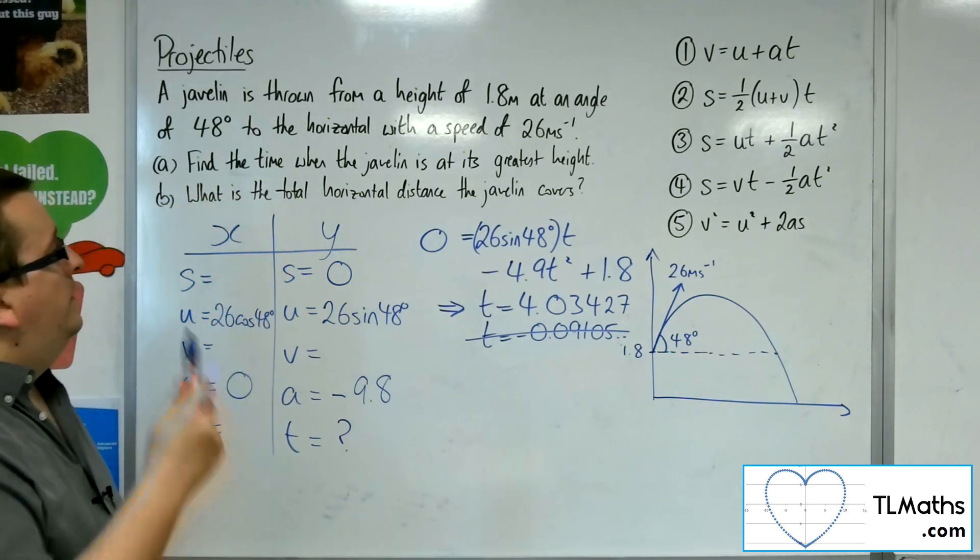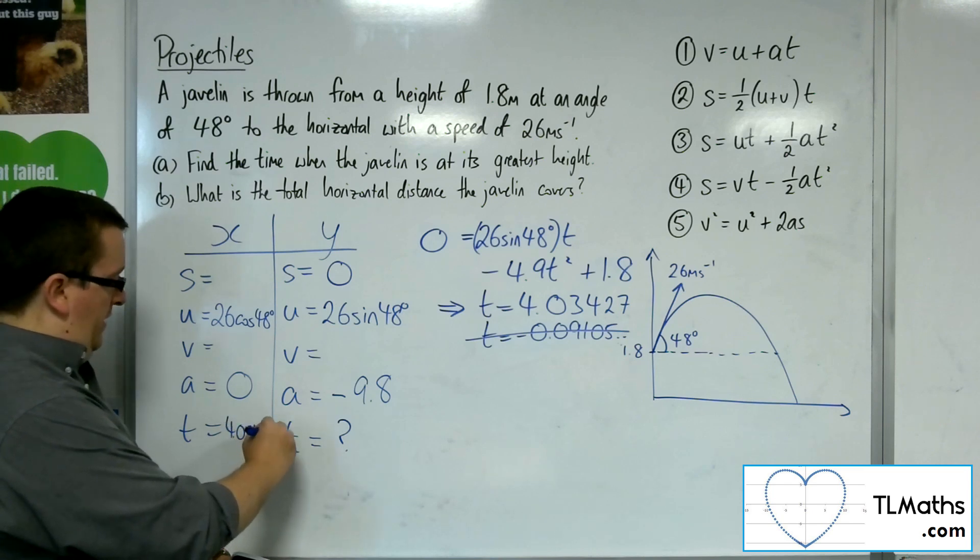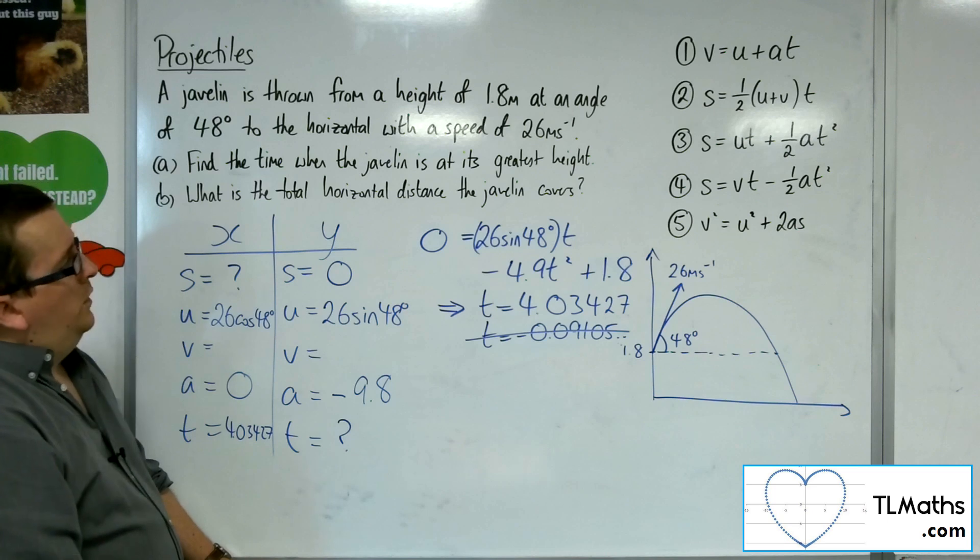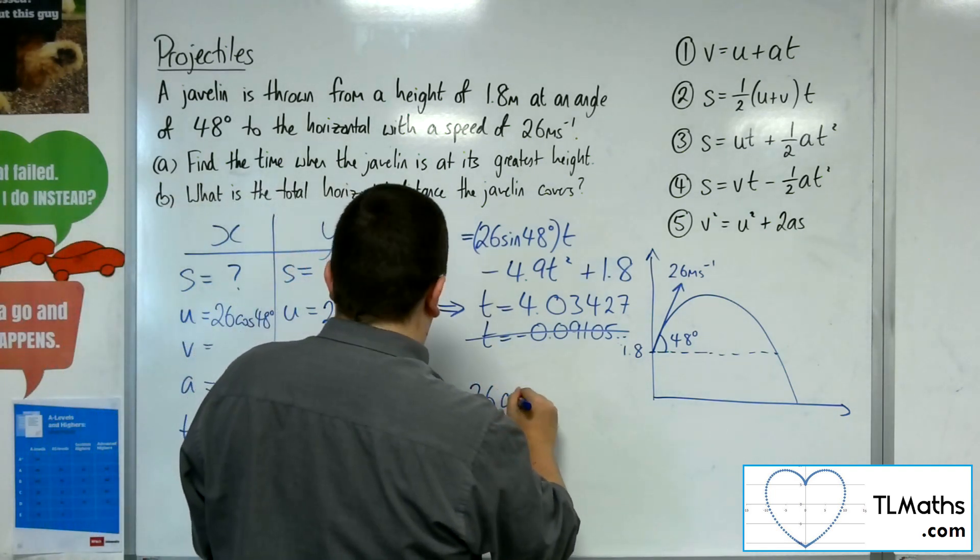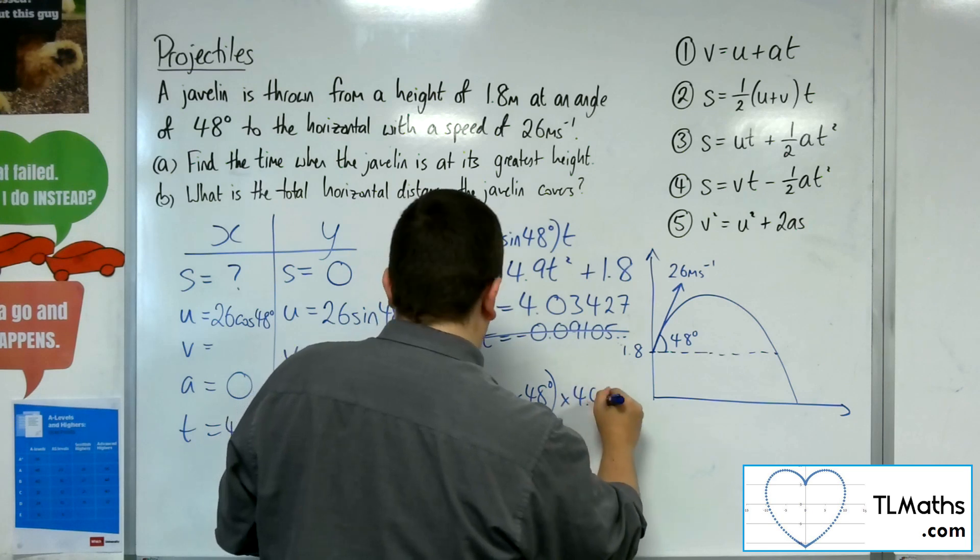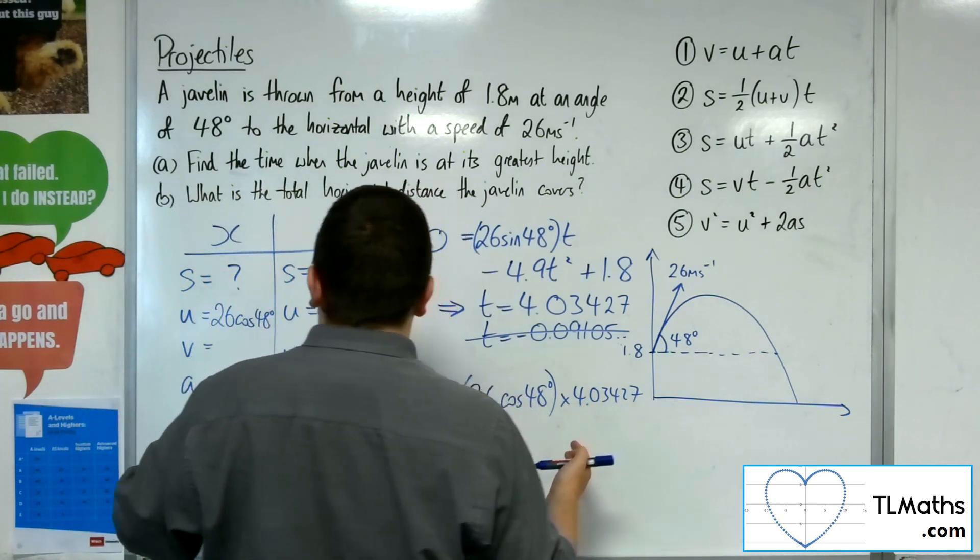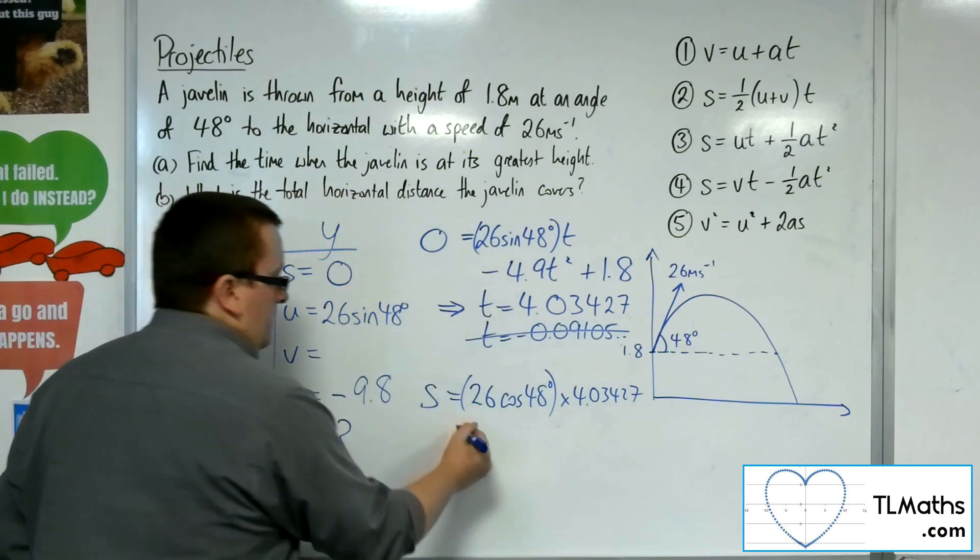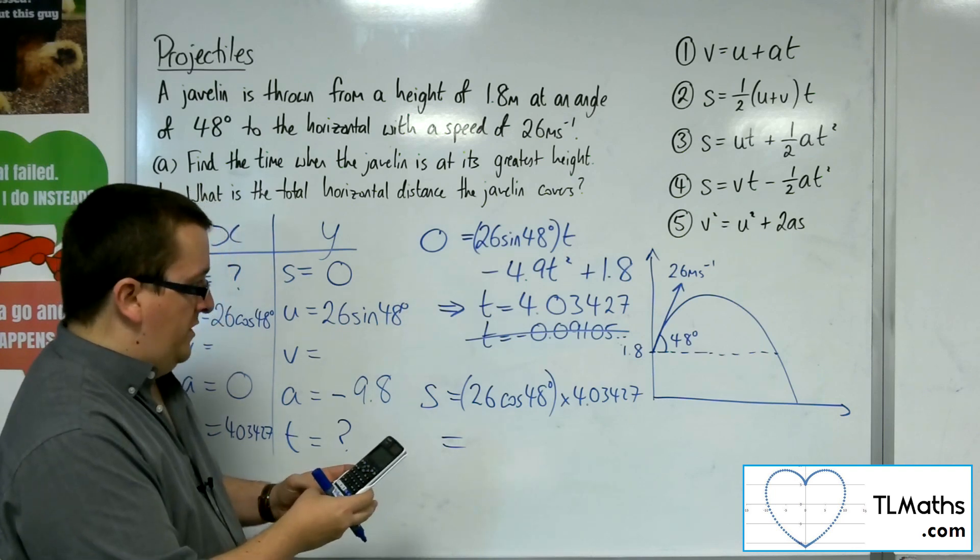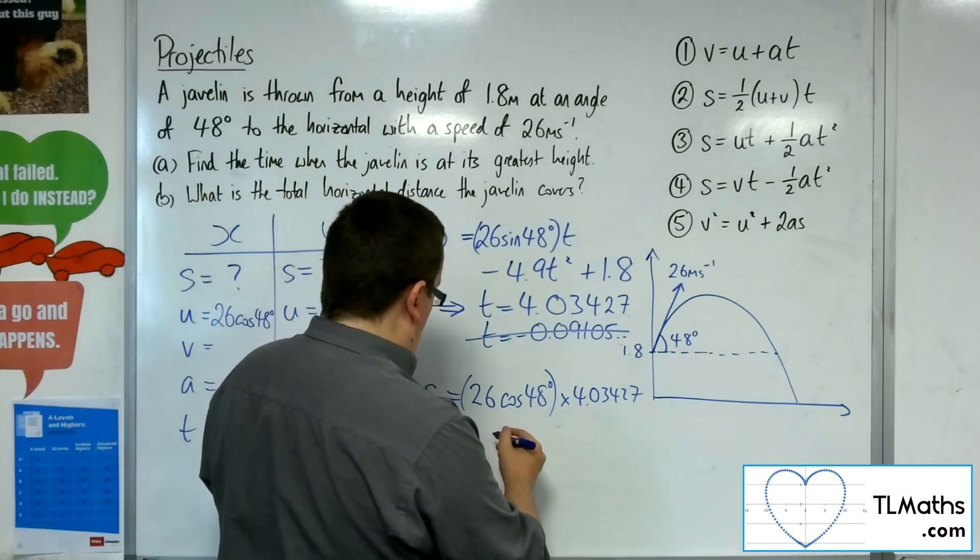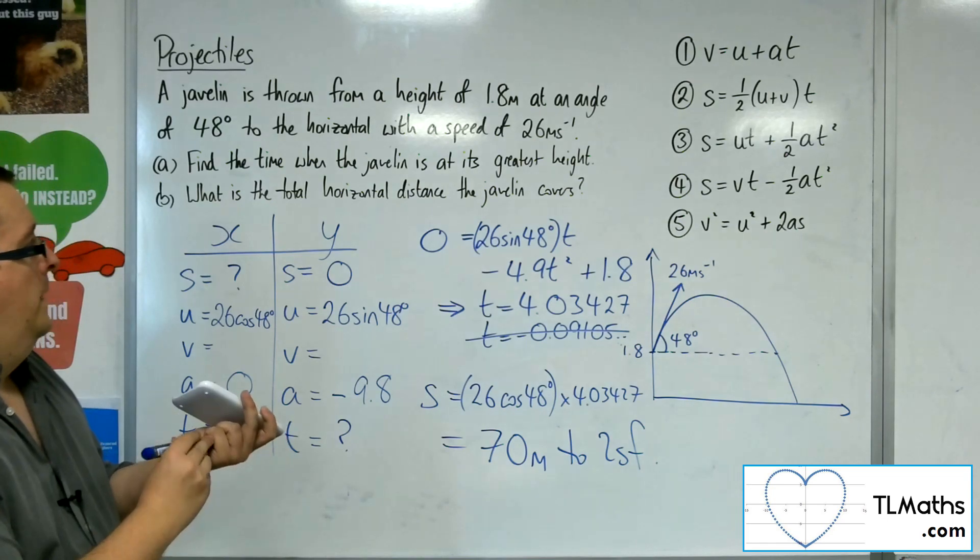So, now I want to find the displacement, the horizontal displacement, at that time. So, I've got the 4.03427 going in there. And I want to find the displacement. So, I'm going to use equation number 3 again. So, S is equal to U times T. So, 26 cosine 48 times by 4.03427. And then plus a half AT squared. Well, A is 0. So, it's just that. So, we've got 26 times cosine 48 times by 4.03427. And I make that 70.2 or 70 meters to two significant figures. And so, that's how we can solve this problem.